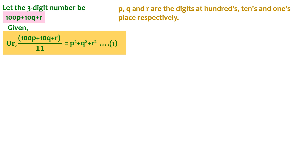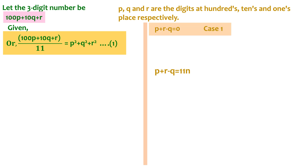We utilize the other information given in the question: this number is divisible by 11. We know that when a number is divisible by 11, the sum of digits in odd positions minus the sum of digits in even positions is either 0 or divisible by 11. Let's make two cases out of this. For Case 1, the difference between the sum of digits in odd positions and even positions is 0, giving us p + r − q = 0, or p + r = q.